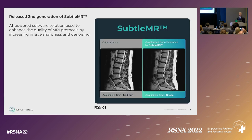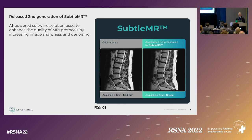We have two FDA-cleared products. The first is SubtleMR, and this is the second generation — we've learned a lot from the first. It is an AI-powered software solution to accelerate and enhance the quality of MRI protocols through two methods: denoising and increasing sharpness, or super-resolution.